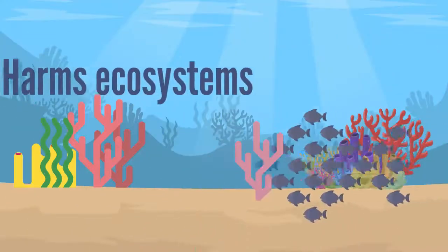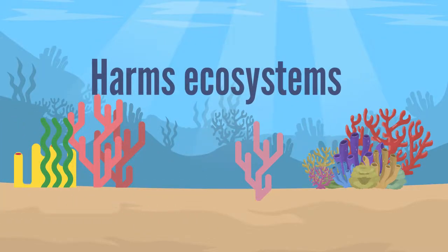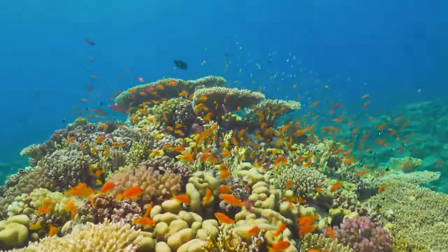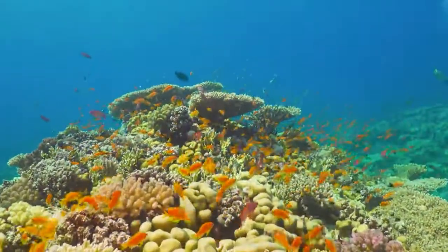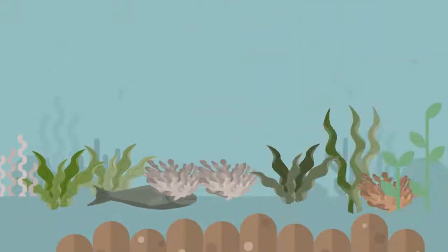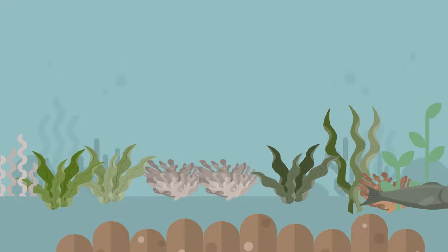It also harms ecosystems. Coral reefs are particularly affected. For example, many fish eat the algae that keep the coral reefs clean and thriving. In areas where these fish have been overfished, the algae tend to overgrow, which kills the corals and negatively impacts the many species that call the reef home.